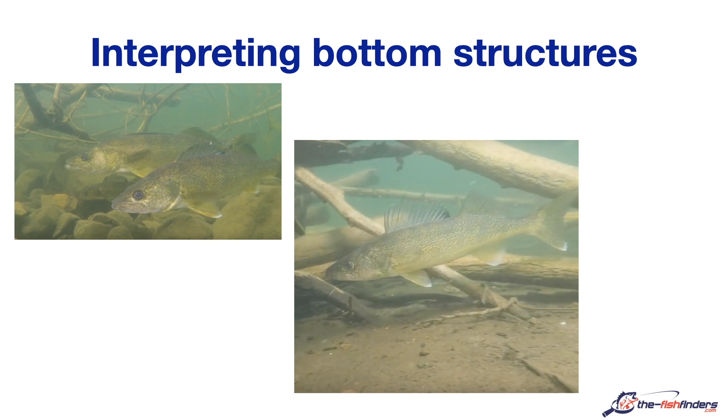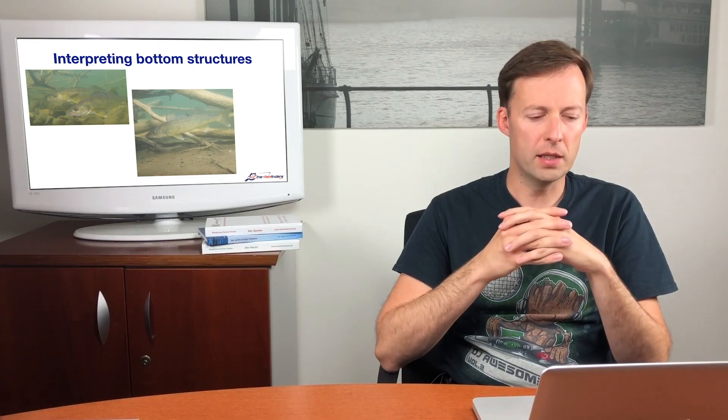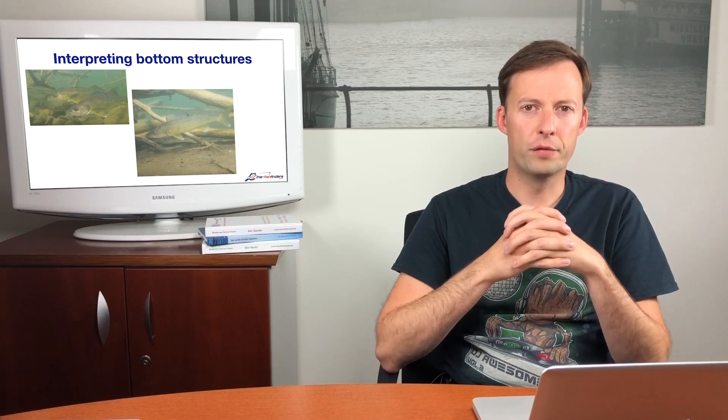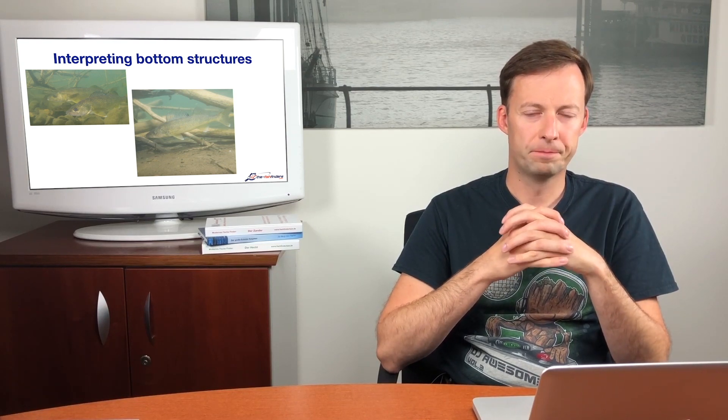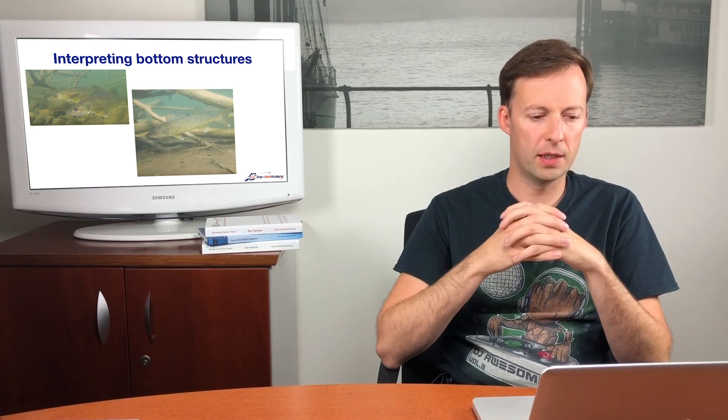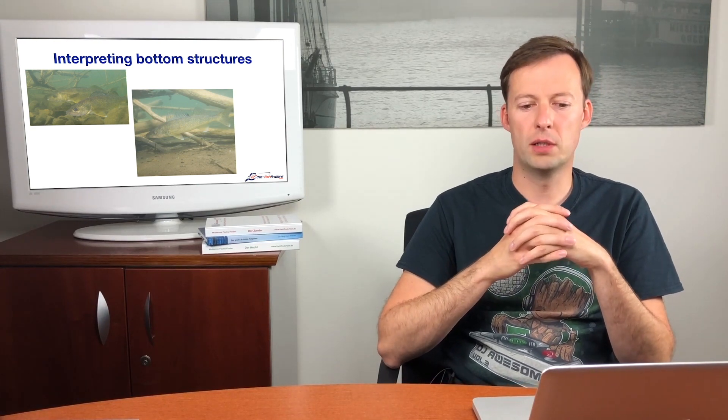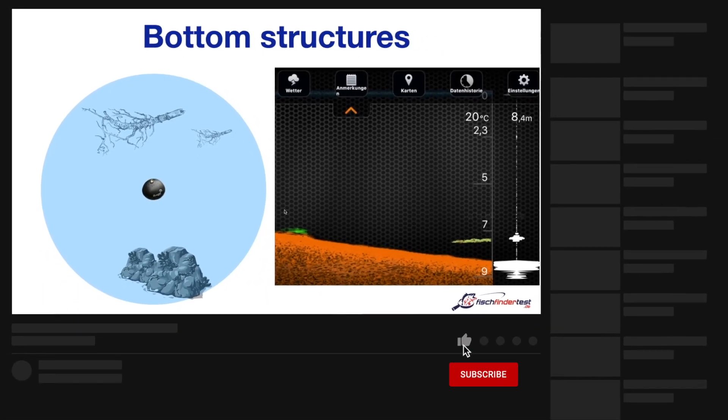Let us now take a closer look at structures on the bottom. Finding them means finding fish. Many predators often stay close to structures on the bottom. This is especially the case with strong currents such as in rivers. We know that the flow velocity is much lower near the bottom than in mid-water. And structures on the bottom reduce the flow velocity even more. How can we detect structures with the deeper?